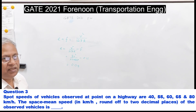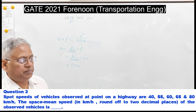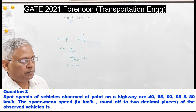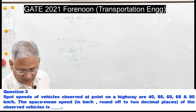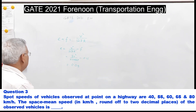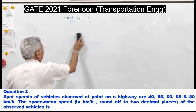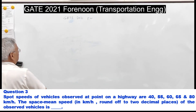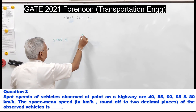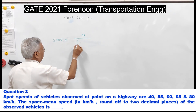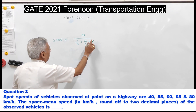The third question: spot speeds of vehicles observed at a point on a highway are 40, 55, 60, 65, and 80 km/h. The space mean speed in km/h, rounded to two decimal places, is to be found. The arithmetic average of spot speeds gives the time mean speed; space mean speed is the harmonic mean of spot speeds: n divided by (1/v1 + 1/v2 + ... + 1/vn).